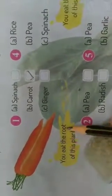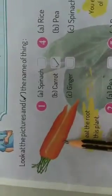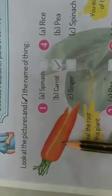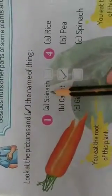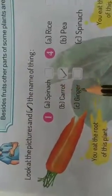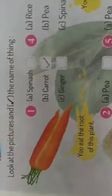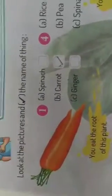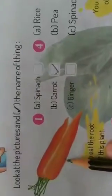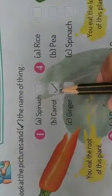We eat the root of this plant — आप इस plant की जड़ को खाते हो. The options are spinach, carrot, or ginger. यह carrot है, और हम carrot की root को खाते हैं जो जमीन के अंदर आती है. So B के सामने correct का tick लगाएंगे.